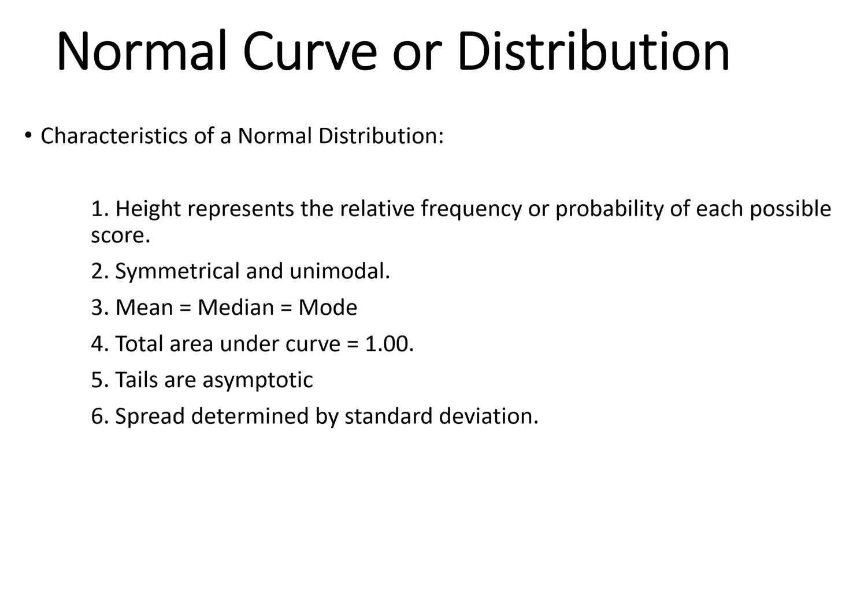A perfect, beautiful, normal distribution is symmetrical and unimodal — symmetrical meaning that each side is basically a mirror image of the other, and unimodal means it has one mode or one hump in the distribution. In a perfect normal distribution, the mean, median, and mode are all identical, so the average score is also the 50th percentile and also the most common score.